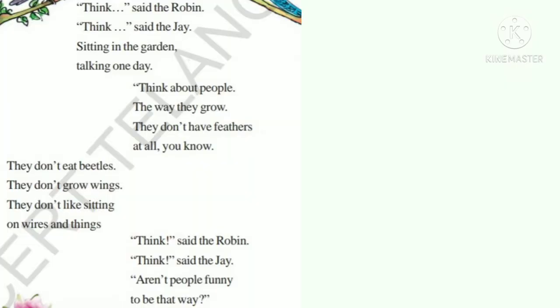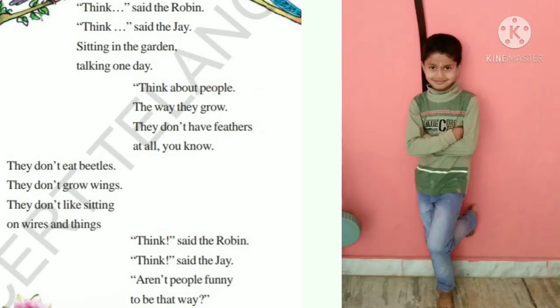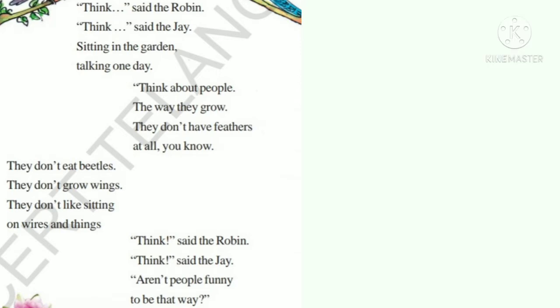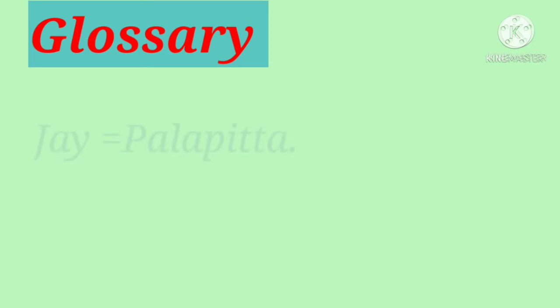Okay, dear Anurag, can you sing this poem once? Come on, boy, try. Think, said the Robin, think, said the Jay, sitting in the garden, talking one day. Think about people the way they grow, they don't have feathers at all you know. They don't eat beetles, they don't grow wings, they don't like sitting on wire-side things. Think, said the Robin, think, said the Jay — aren't people funny to be that way? Oh, very good, Anurag! Well tried.